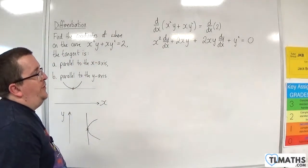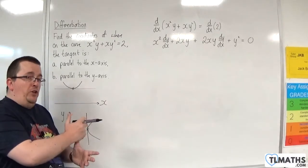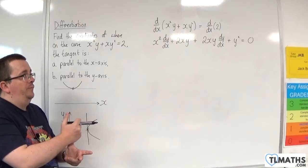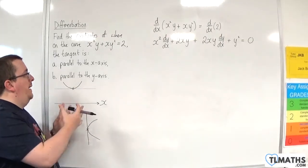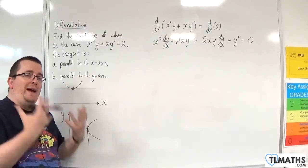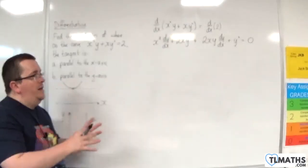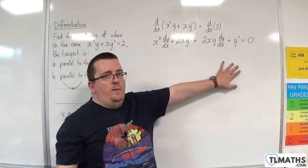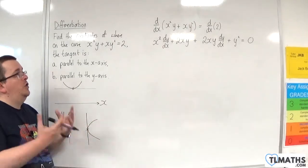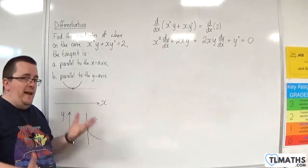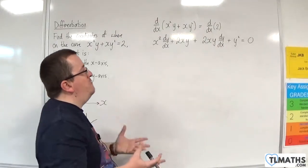Now my options here are to rearrange to get dy/dx equals and then solve the problem. For part A, because we want to find whether it's parallel to the x-axis, you can either rearrange to get dy/dx equals and then put the numerator equal to 0, or you can put dy/dx equal to 0 now - there's nothing stopping you from putting dy/dx equal to 0 now.